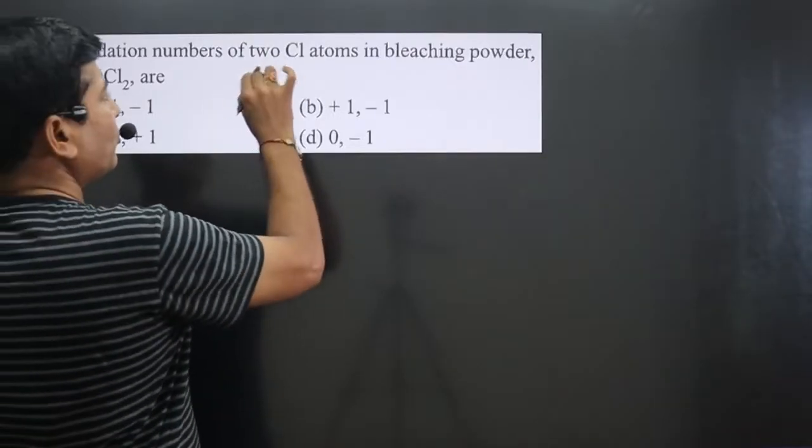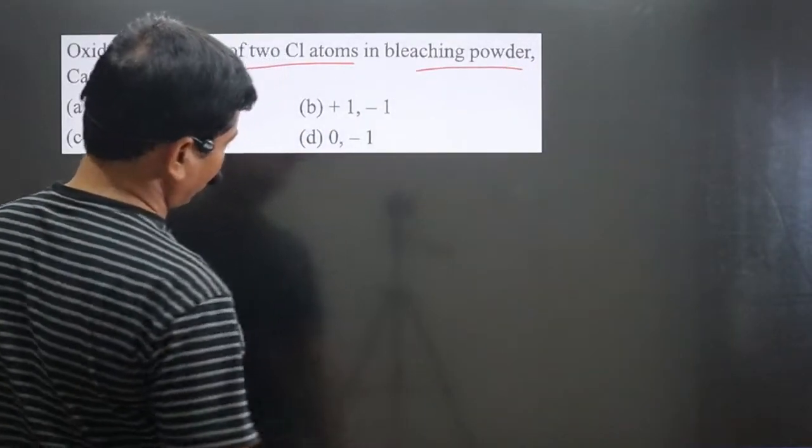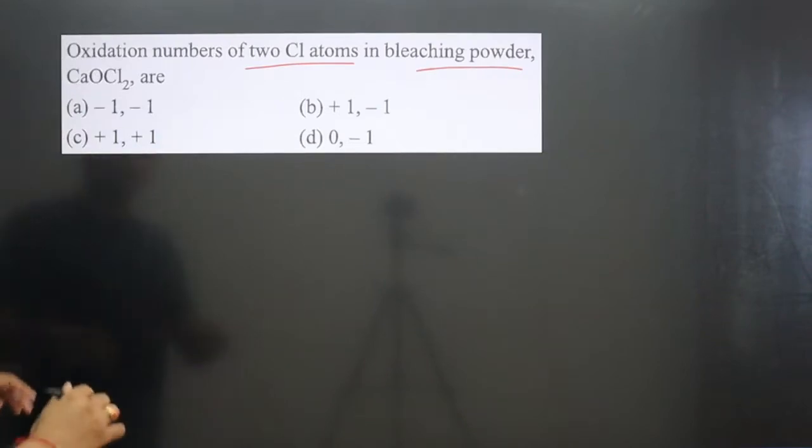Question says oxidation number of two chlorine atoms in bleaching powder. The chemical formula of bleaching powder is there: calcium, oxygen, Cl2.